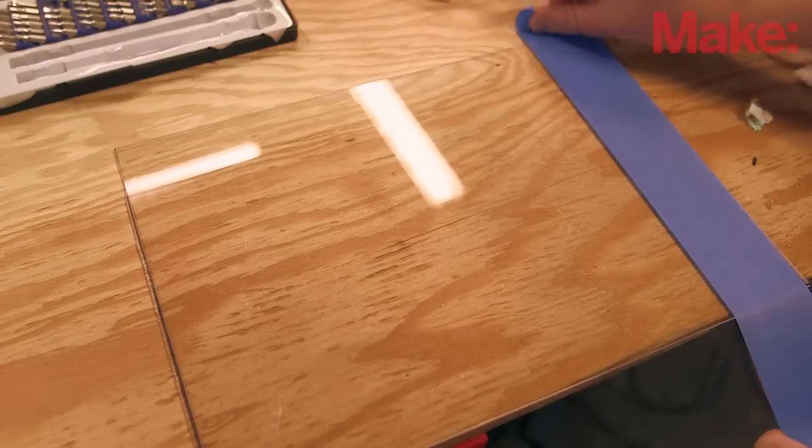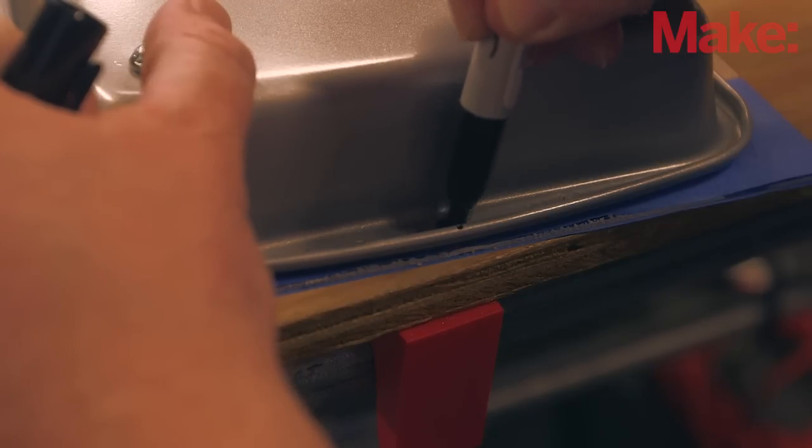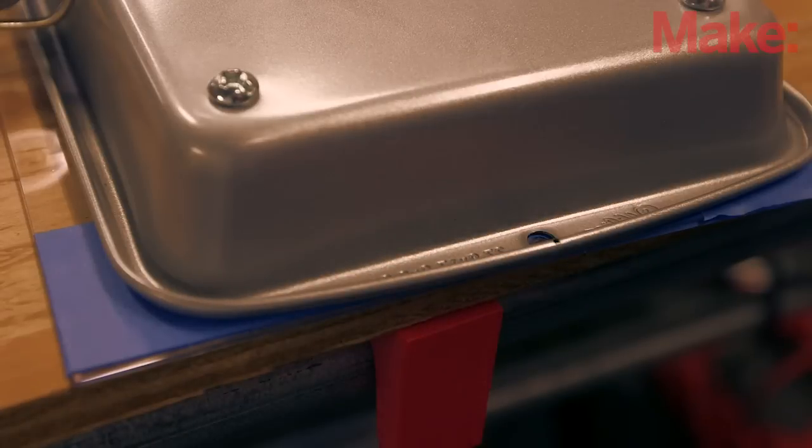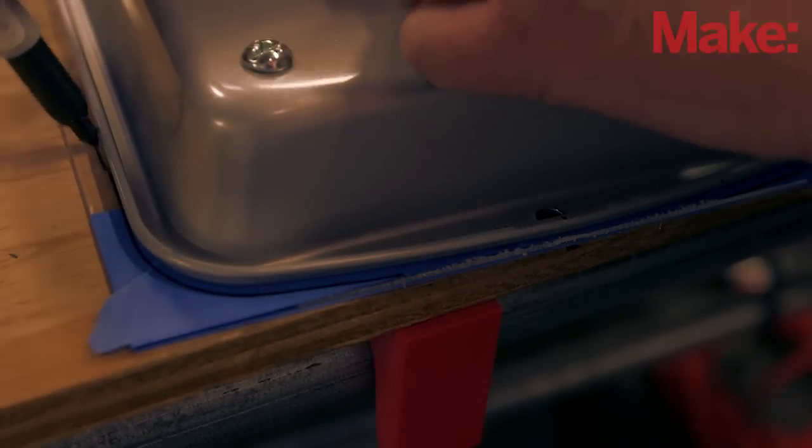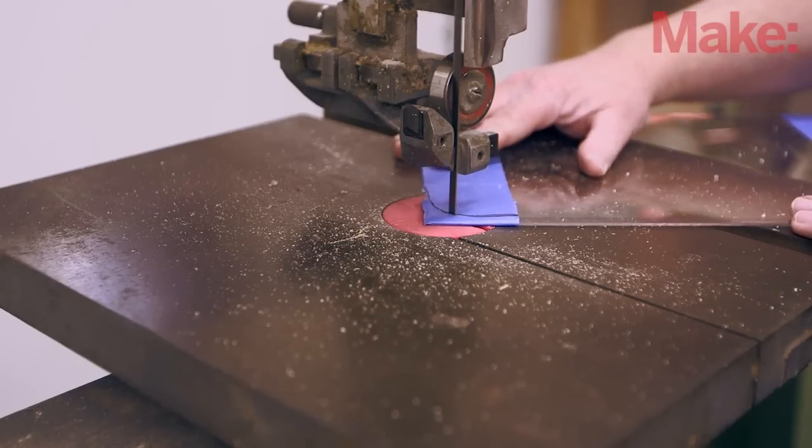Finally, cover the ends of the plexiglass panel with masking tape, and use the original holes on the sides of the brownie pan to mark matching holes in the plexiglass, and then draw an outline of the brownie pan onto the tape. Drill one quarter inch holes at your marks, and then use a band saw to cut the shape of the plexiglass to match the tin.